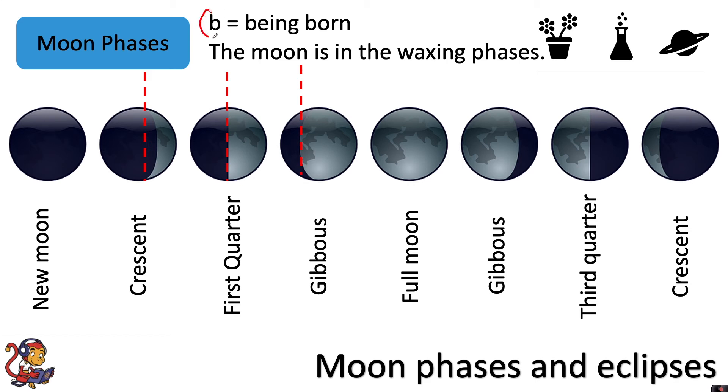And you can think of B as the Moon being born and at this point the Moon is in its waxing phases. What it means is you are going to gradually see more of the Moon as these phases progress until you get to the stage of the full Moon.